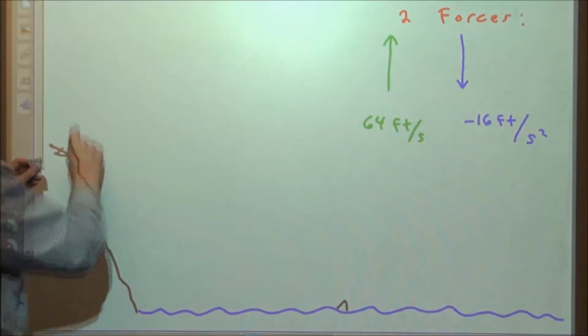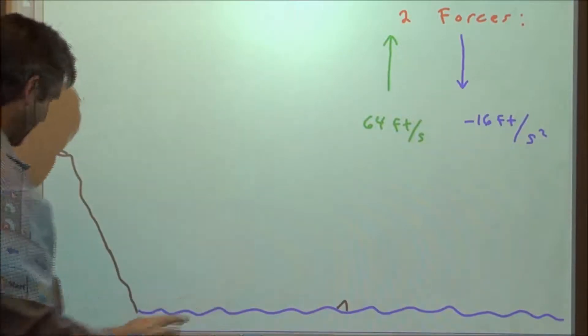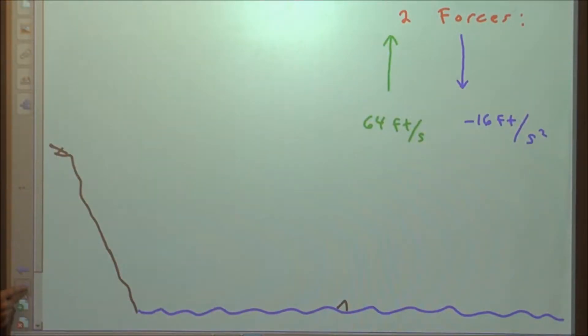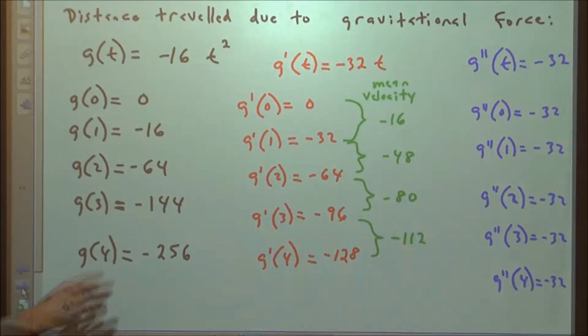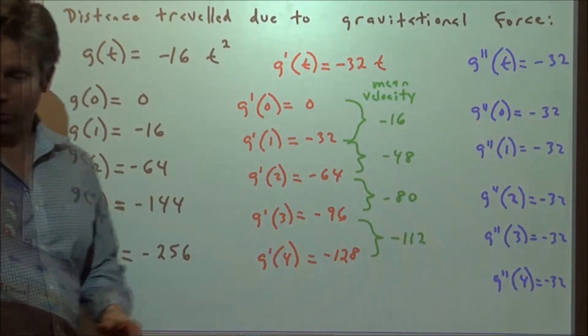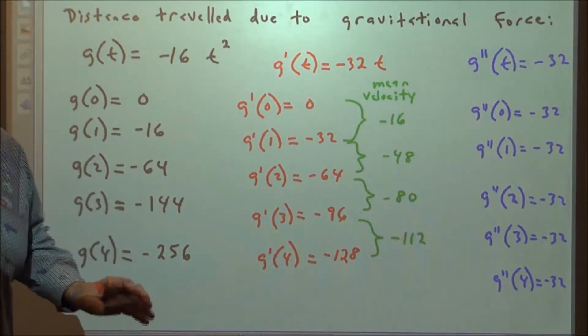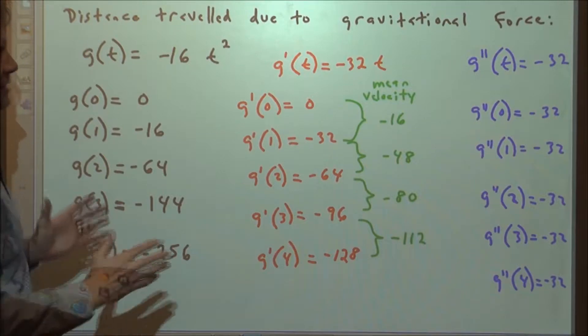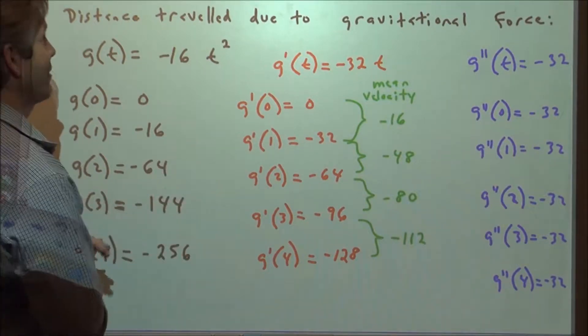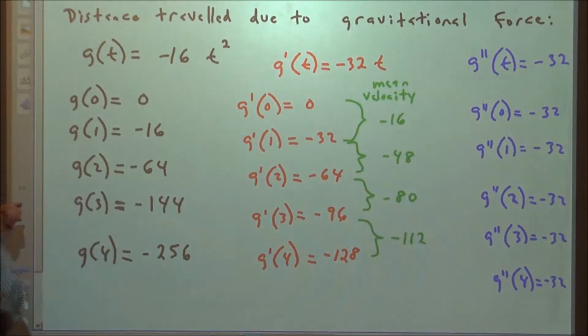We could launch Fluffy at more of an angle, in which case there'd be two components of the initial launch — how far we push her in the horizontal direction and how far in the vertical. But when it comes to these upward projectile problems, all we're dealing with is the upward force, the straight up-and-down vertical force, and then the force of gravity. If you can wrap your brain around this, a lot of things are going to start to make sense.